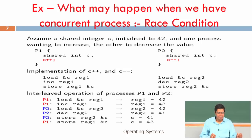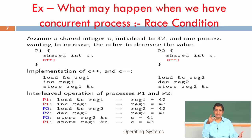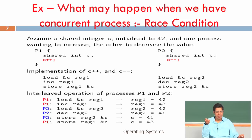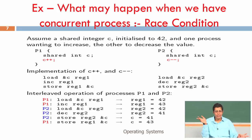What does C++ mean at the assembly level? That C++ is actually three assembly instructions: load the content of C into register 1, increment register 1, store the content of register 1 back to C. Similarly, C-- is: load the content of C into register 2, decrement register 2, store register 2 back to C. These are three assembly instructions each.